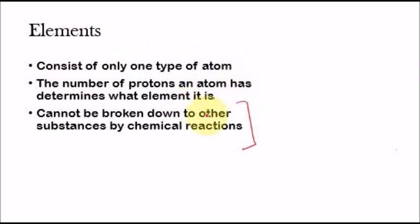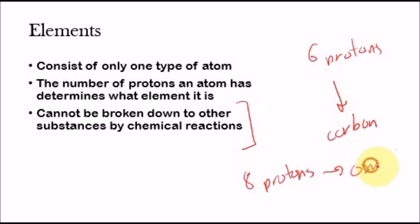And elements consist of only one type of atom. And the number of protons an atom has determines what element it is. So, for example, if you have an atom and that atom has six protons, that means it's going to be carbon. And carbon is one of the elements. If an atom has eight protons, that means it's going to be oxygen. If an atom has three protons, that means it's going to be lithium.